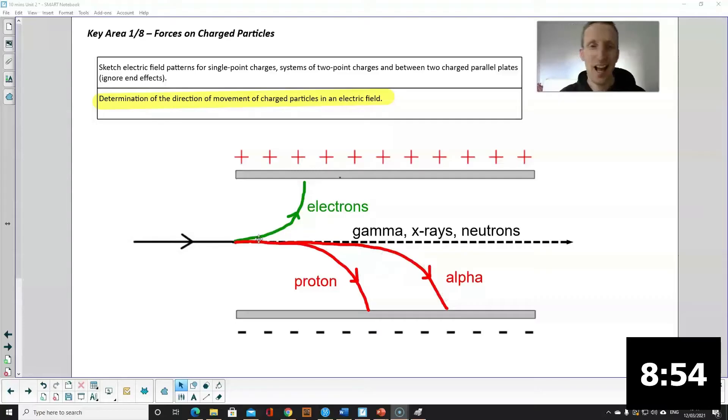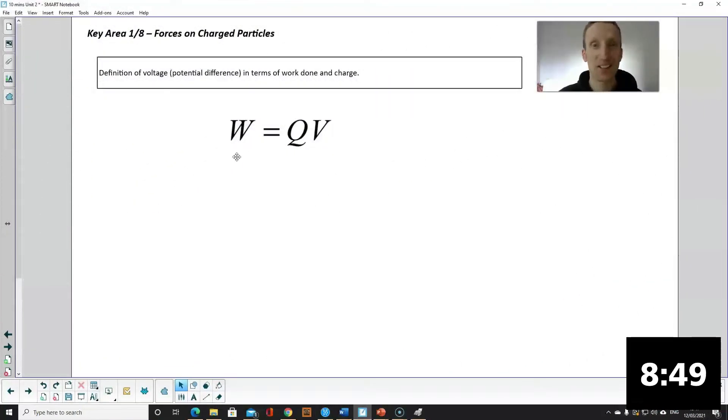Why are they turning? Something that's nice and light like an electron will turn nice and quickly. Electric field equation: Work done equals charge times voltage.